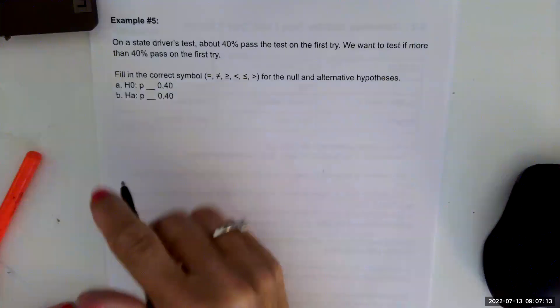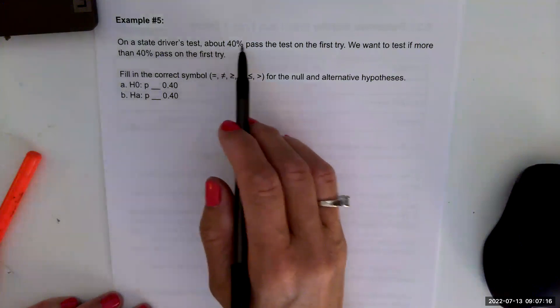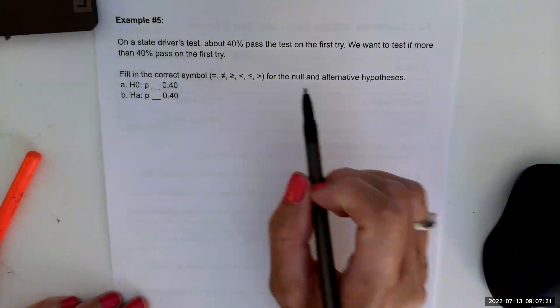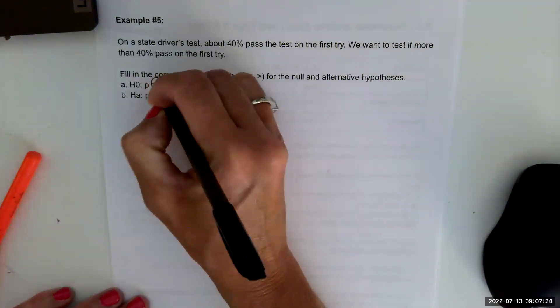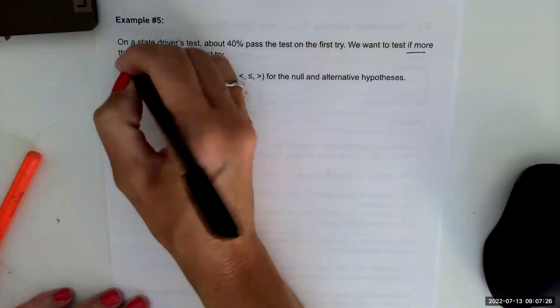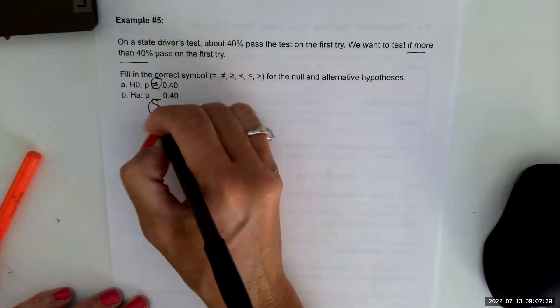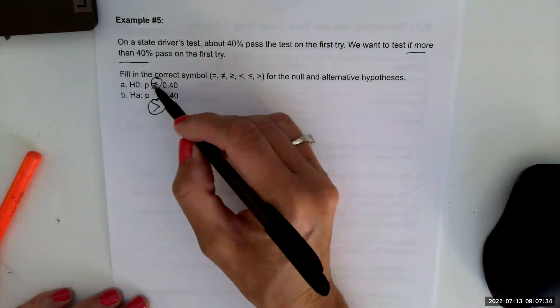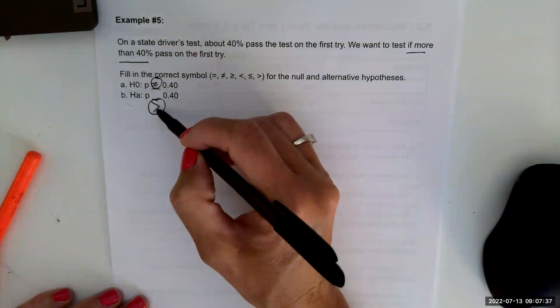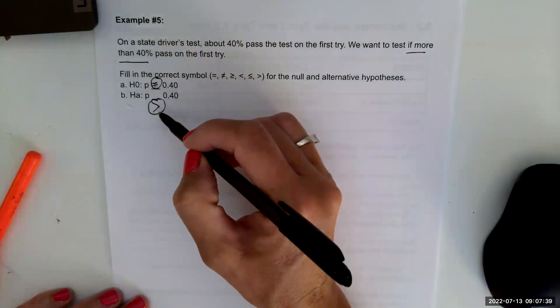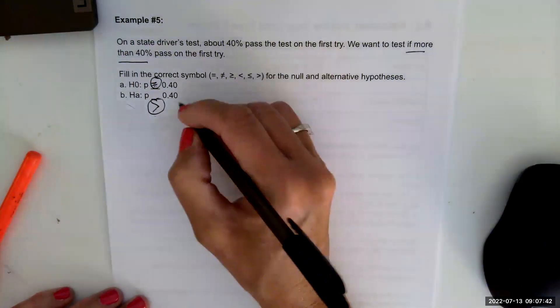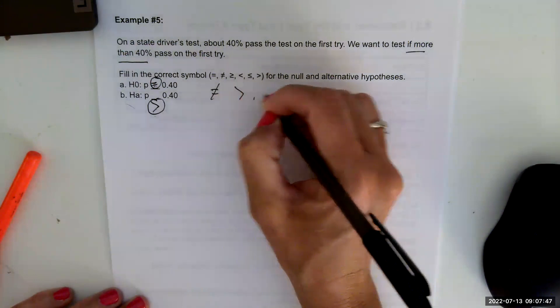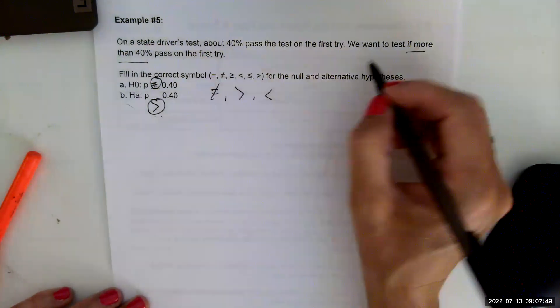The last example for 9.1, on a state driver's test about 40 percent pass the test on the first try. We want to test if more than 40 percent pass on the first try, so null is equal to and it was a test for more than 40 percent so that would be a greater than. So the null is always an equal to and the alternative is always a greater than, or less than, or not equal to. This is a greater than because it said more than.